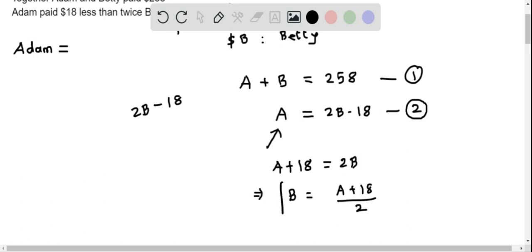Now I found a relation for B in terms of A. I can substitute this value of B into equation one. This becomes A + (A + 18)/2 = 258.